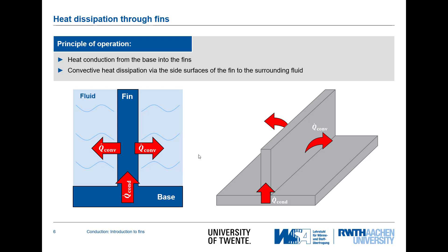What are the principal mechanisms that take place? We are in the lecture on conduction, so conduction is the most important part taking place inside the material. From the base where heat is released, a conductive heat flow goes into the fin. On the fin surface — on both sides and maybe also on the top — there is an interaction with the fluid, so the heat transferred through the base into the fin is released by convection to the outside.